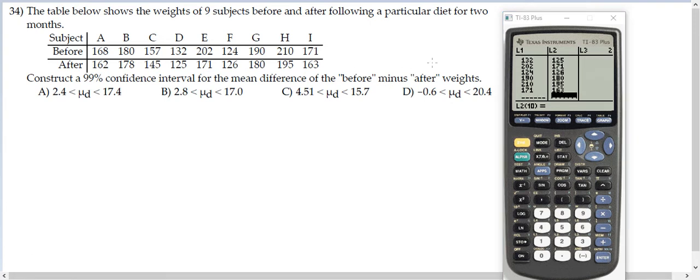Now I've entered my data. Remember when we do a matched pairs question, we have to go over to list three. We move over and then hit the up arrow to go up one. Then we say we're going to take list one minus list two. We press enter and it calculates those values for us.